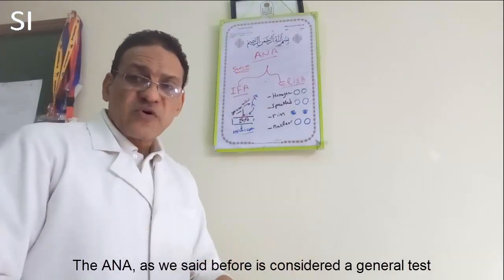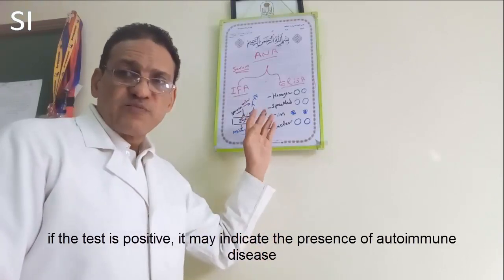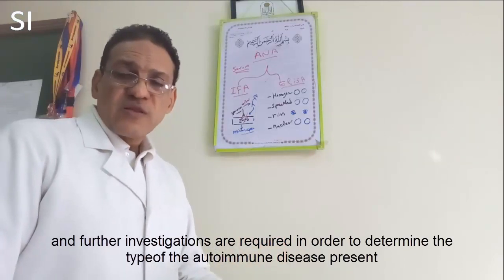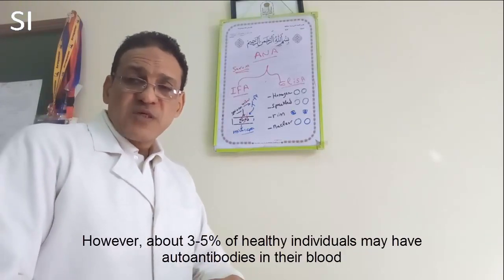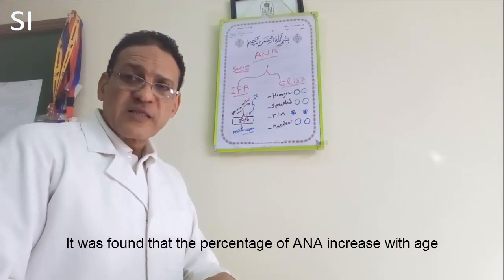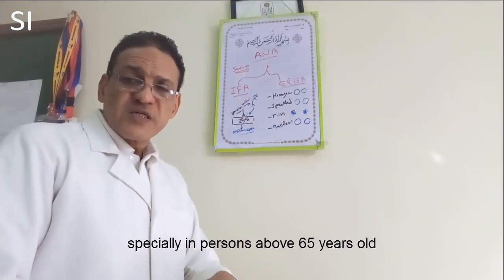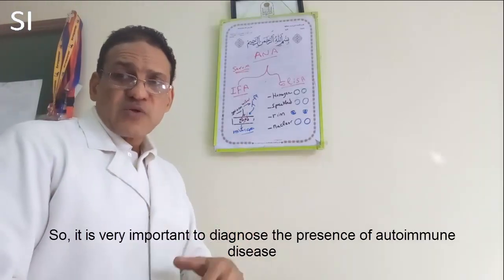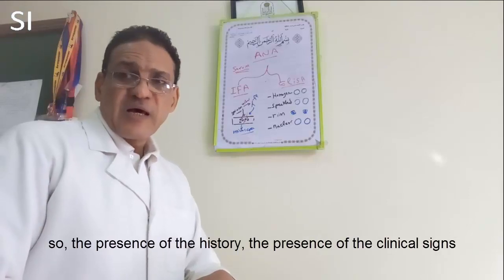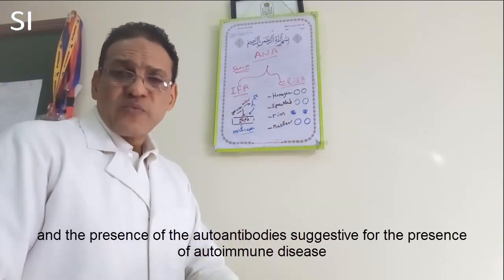The anti-nuclear antibody test is considered a general screening test and is the first test performed to diagnose autoimmune disease. If the test is positive, it may indicate the presence of autoimmune disease, and further investigations are required to determine the specific type. However, about 3 to 5 percent of healthy individuals may have these antibodies in their blood, and the percentage increases with age, especially in persons above 65 years old. Therefore, it is important to diagnose autoimmune disease in combination with the presence of clinical signs, patient history, and autoantibodies together.